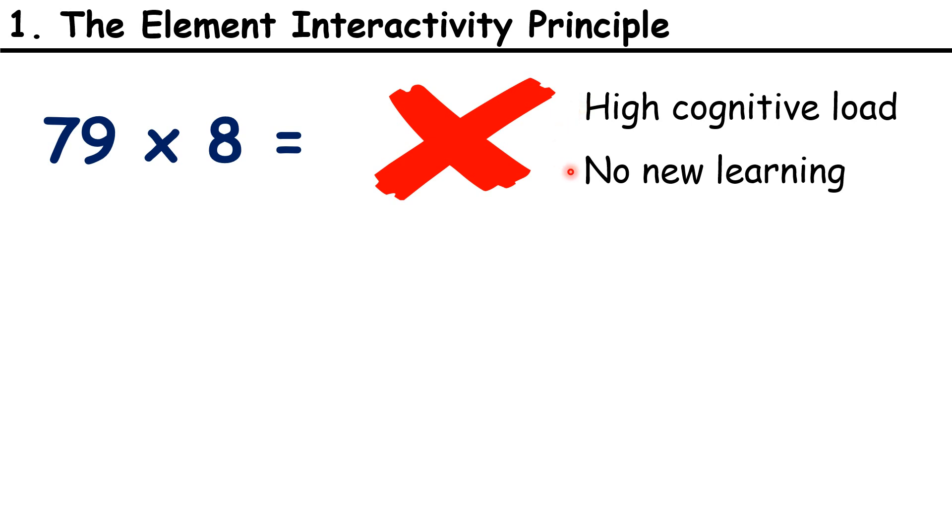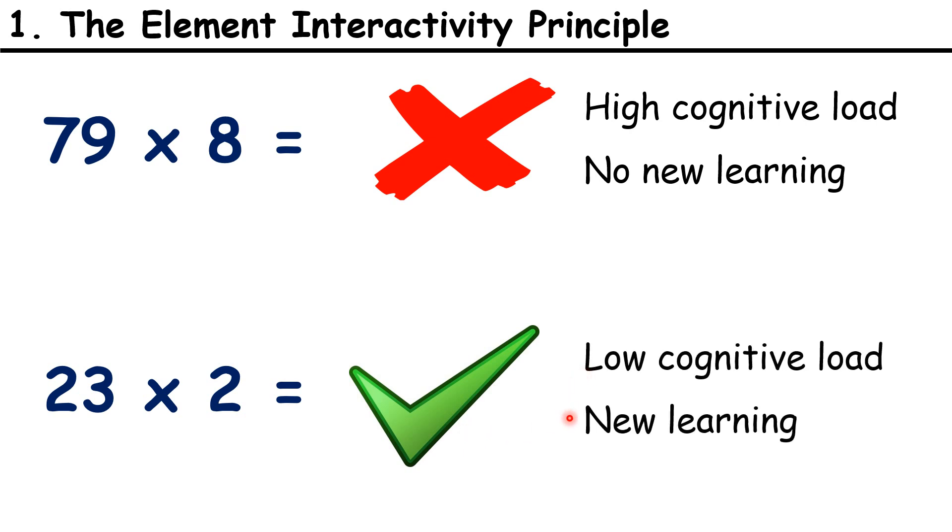So instead, it's more effective to reduce the cognitive load when you're teaching something unfamiliar, and keep the numbers simple, starting with questions like 23 times 2. So there's a lower cognitive load, and children can transfer knowledge of the method into their long-term memory.